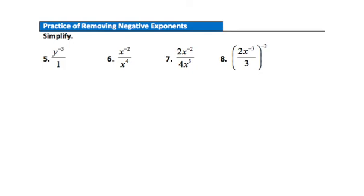Question 5: just one negative exponent to remove — y to the negative third. Take that y to the negative third and bring it down to the denominator. There will be a 1 left in the numerator, and in the denominator y to the third times 1 is just y to the third.